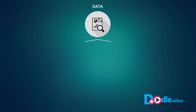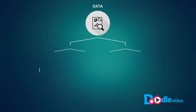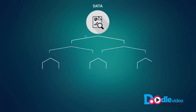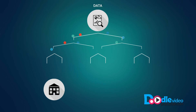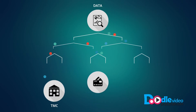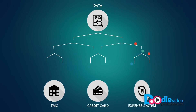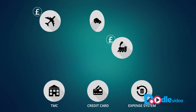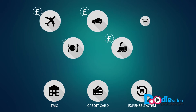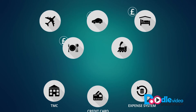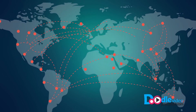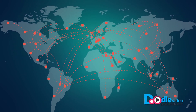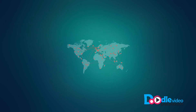His travel data is captured and stored in at least three sources – the travel management company, corporate credit card and company expense system. Calculating the total cost of the trip for this single traveller isn't difficult. But how do you calculate the cost per trip for many travellers and thousands of trips?